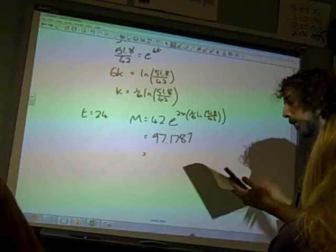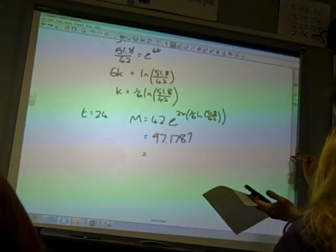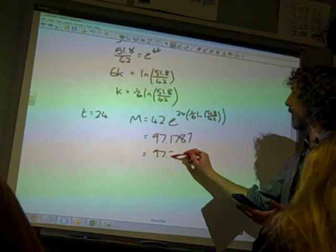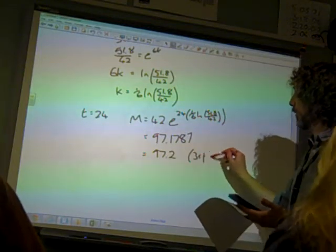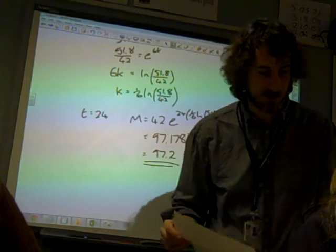So, what did we say? Three significant figures. 97.2. Three significant figures. There we go. And that's the answer.